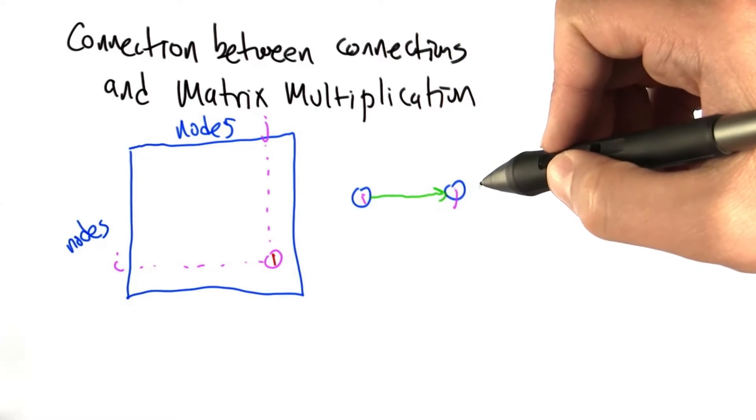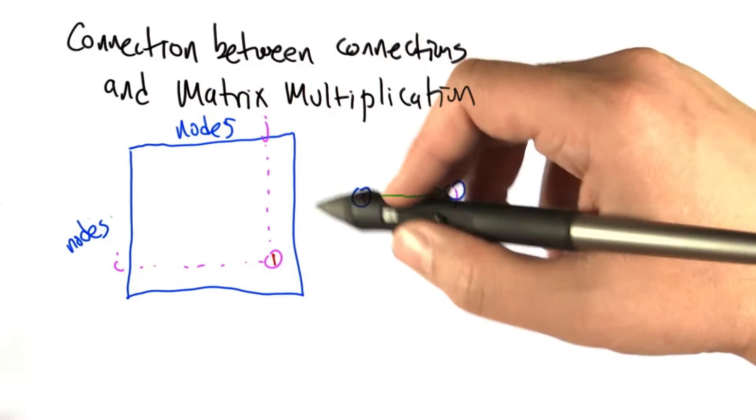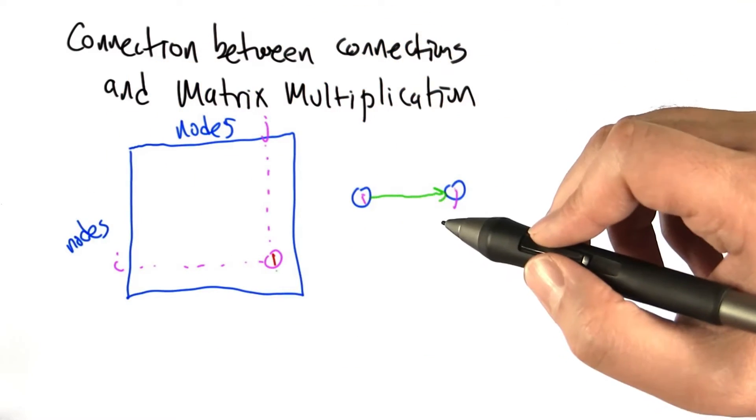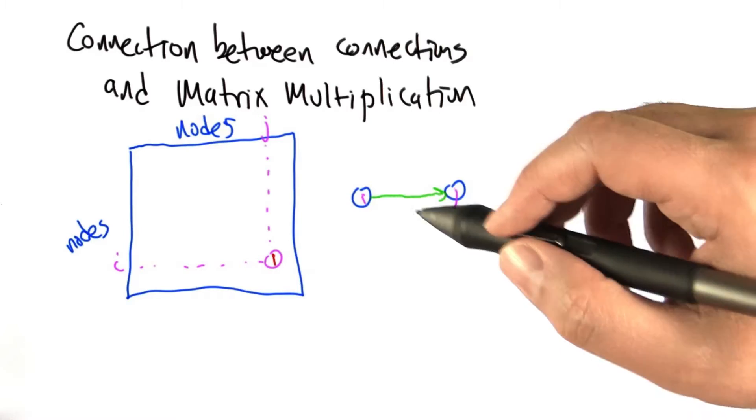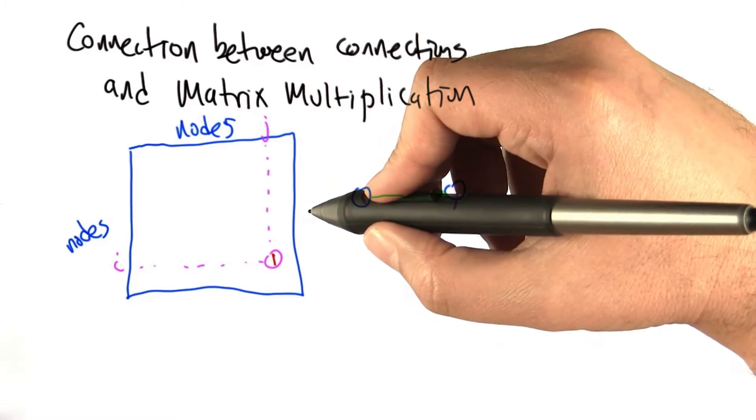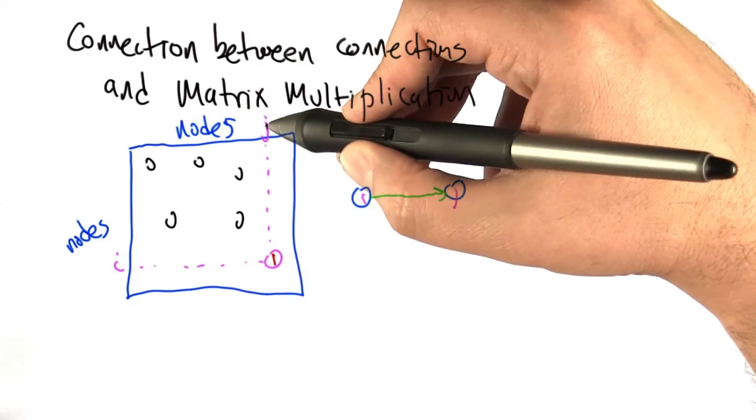The first thing you need to understand is that we can represent a graph on a set of nodes as a matrix, and it's a matrix that consists of all zeros and ones. If it's a sparse graph, say mostly zeros, but if there's a link between node i and node j, then the corresponding position in the matrix has a number in it, a number 1.